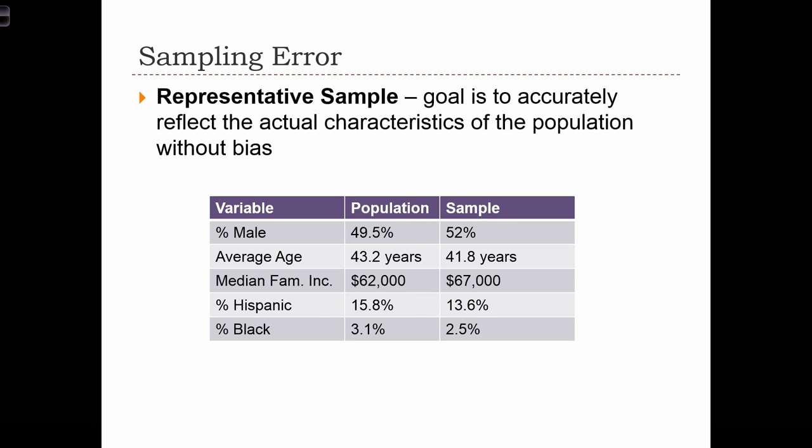All samples come with what we call sampling error. Recall that sampling error is the difference between the measured results and the true results of the population. The goal of sampling is to conduct a representative sample — to accurately reflect the actual characteristics of the population without any bias. Bias, in this sense, is a difference between the sampled characteristics and the population characteristics.